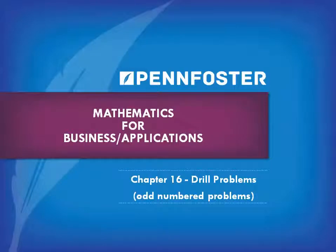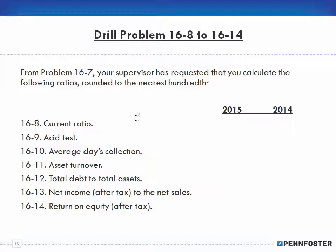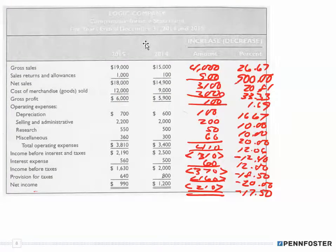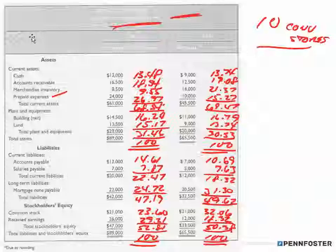Welcome back students taking math for business and finance and math applications. We are finishing off the last of the drill problems for chapter 13. From problem 16-7, your supervisor has requested that you calculate the following ratios rounded to the nearest hundredth. In drill problem 16-7 you had this income statement with figures for 2014 and 2015.